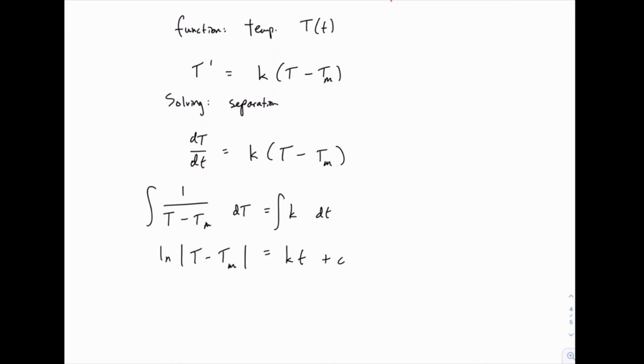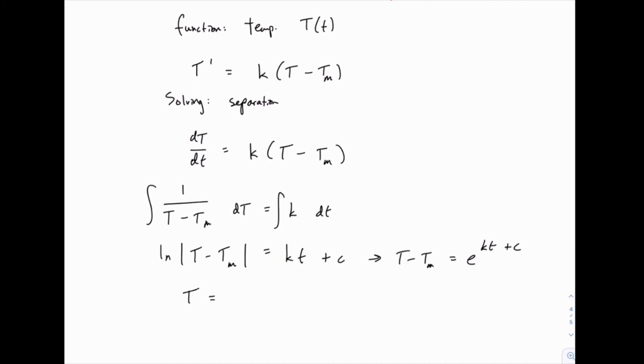And so to solve, we would raise e to the power of both sides. So we would have T minus T_M equals e to the KT plus C. But again, we can write e to the KT plus C as e to the KT times e to the C or A e to the KT. Then if we add T_M to both sides, we get something like this.